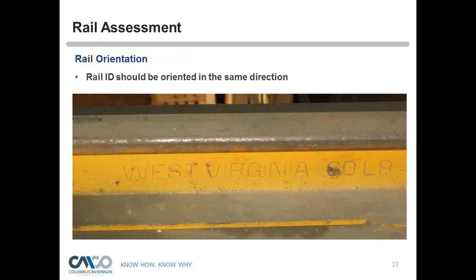The rail ID — manufacturer markings and pound rating — should be oriented in the same direction on both rails. Tom explains that during the rolling process, the rail head can slightly drift off the rail's web, so as long as rails are oriented the same direction, the relative difference between the heads — the important part — won't change.